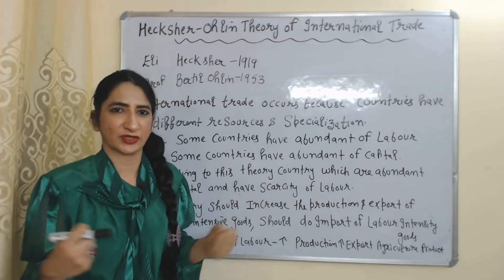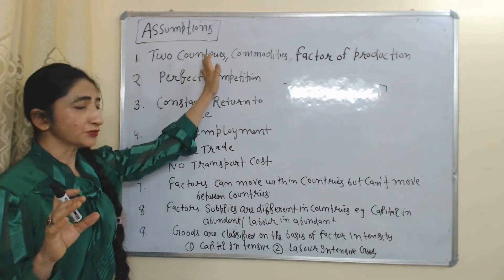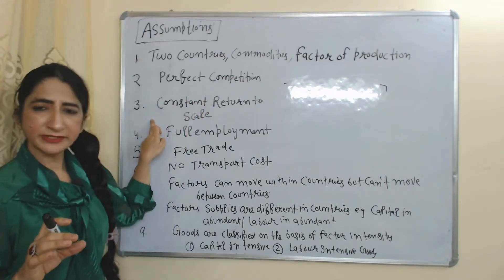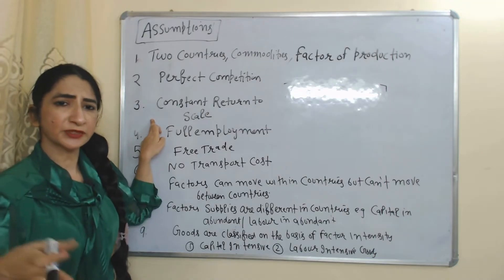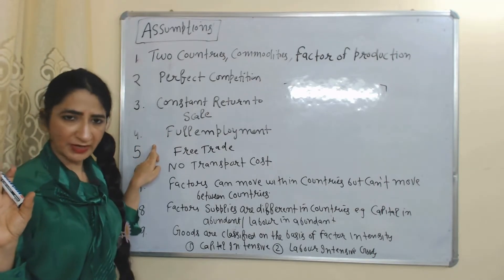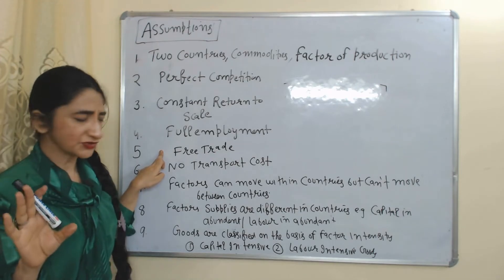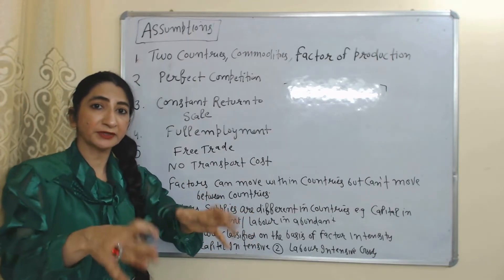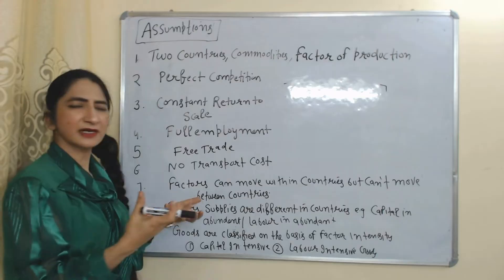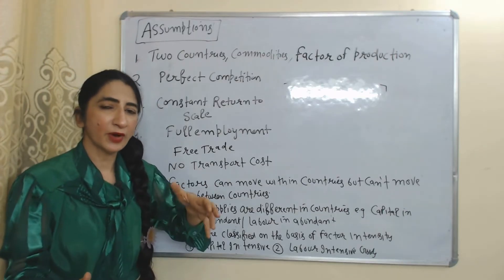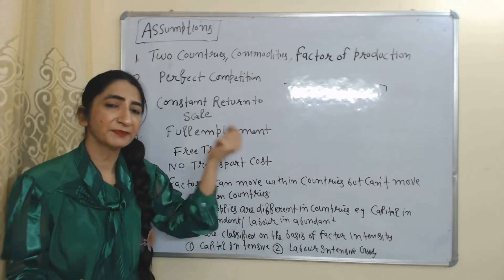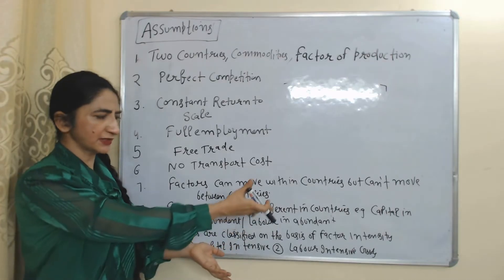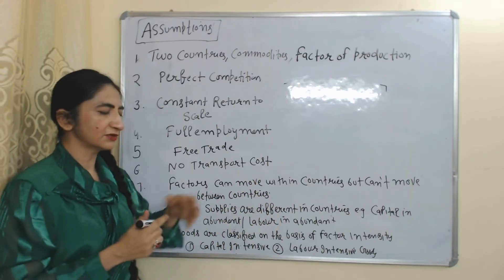Now we will see the assumptions of this theory: two countries, two commodities, two factors of production, perfect competition, constant return to scale — meaning change in output is the same as change in input — full employment, free trade without any restriction, no transport cost, factors can move within a country but cannot move between two countries, and factor supplies are different in countries. For example, one country has abundant capital while the other has abundant labor. Goods are classified on the basis of factor intensity: one good is capital-intensive and the other is labor-intensive.